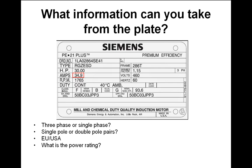Nick worked out the double pole pairs from the RPM figure — spot on. If it's running at 60 Hz, synchronous speed should be 3600 RPM. The motor shows 1765 RPM, which is close to half of 3600 — so it must be two pole pairs. The power comes out to approximately 16 kilowatts.